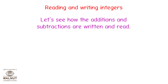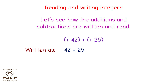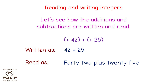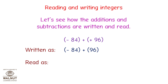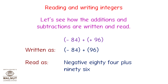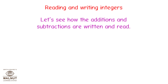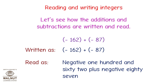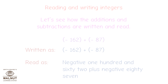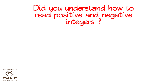Let's see how the additions and subtractions are written and read. Plus 42 plus plus 25 can be written as 42 plus 25, read as 42 plus 25. Minus 84 plus plus 96 can be written as minus 84 plus 96, read as negative 84 plus 96. Minus 162 plus minus 87 can be written as minus 162 plus minus 87, and can be read as negative 162 plus negative 87. Did you understand how to read positive and negative integers? Yes.